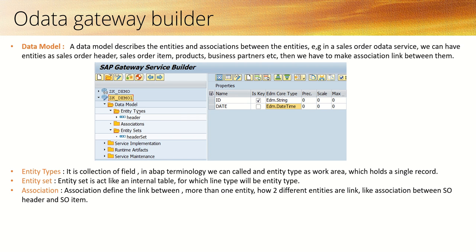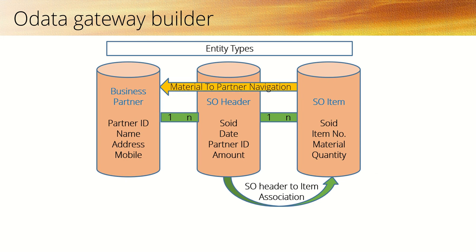What is a data model? The data model describes the entities and the associations between the entities. An entity is a collection of fields. Entity sets act as an internal table for these entity types. If you correlate this with RAP terminology, you can call entity types as a structure which can hold a single record, and the entity set acts as an internal table for the entity type. Association is used when you have different entities like header, line item, partner, etc., and you want to fetch both entities in a single call.